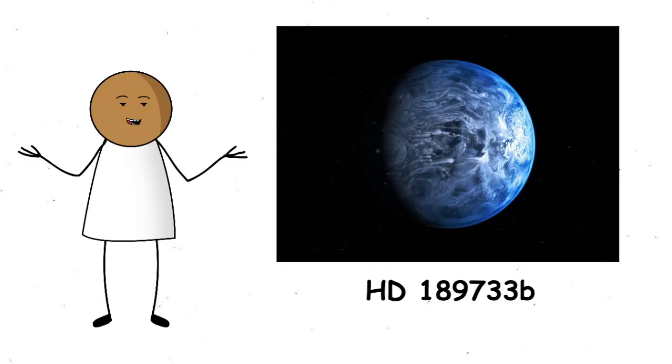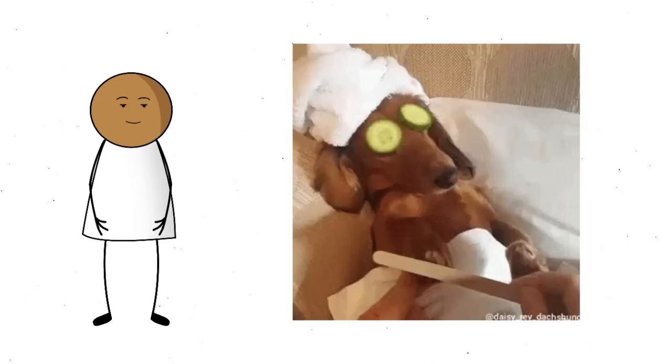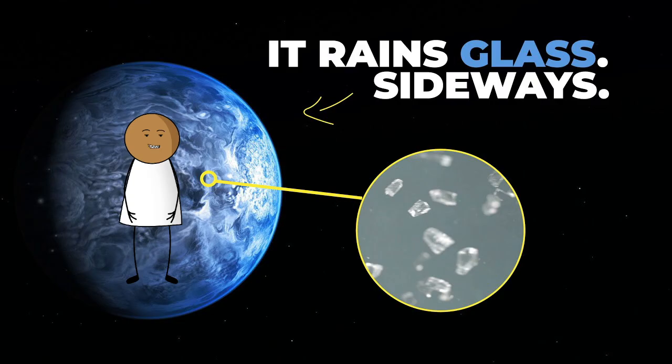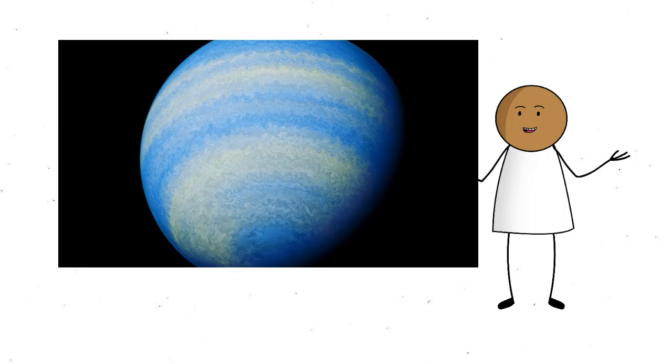Now that we've survived that sunburn, let's visit a planet where the weather doesn't just burn, it stabs. Say hello to HD 189733 b, a planet so terrifying it makes Mercury look like a weekend spa retreat. This deep blue exoplanet orbits a star about 64 light-years away, and it's best known for one thing: it rains molten glass sideways at over 5,000 miles per hour.